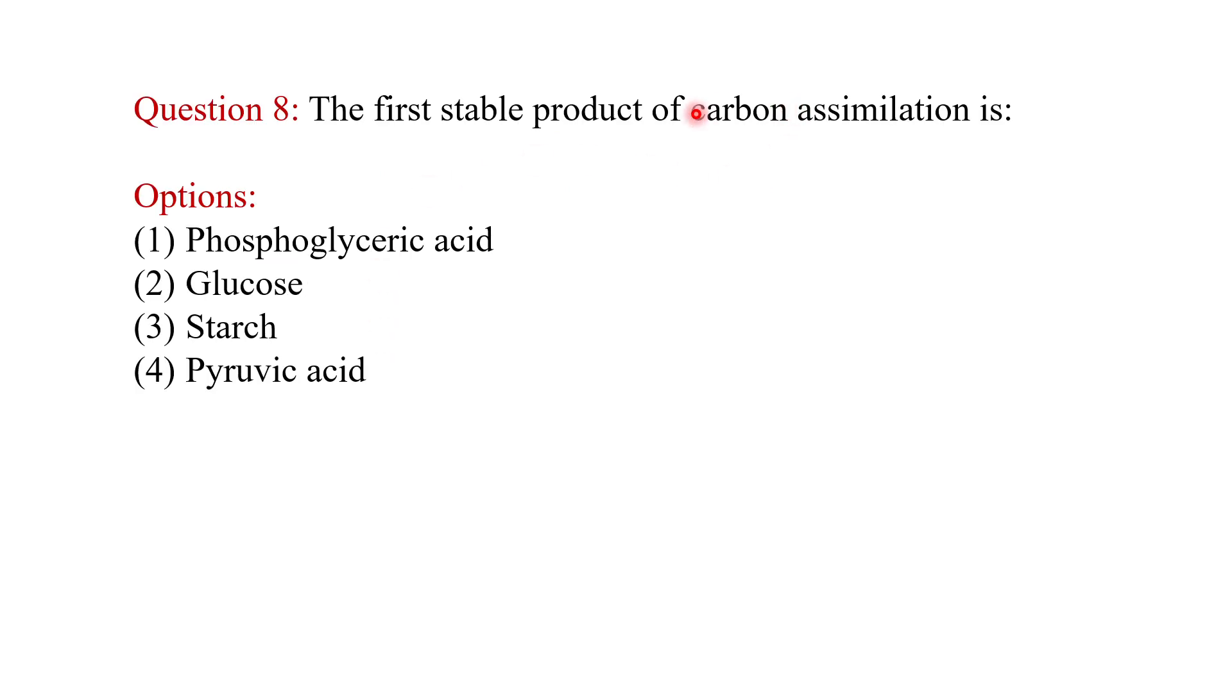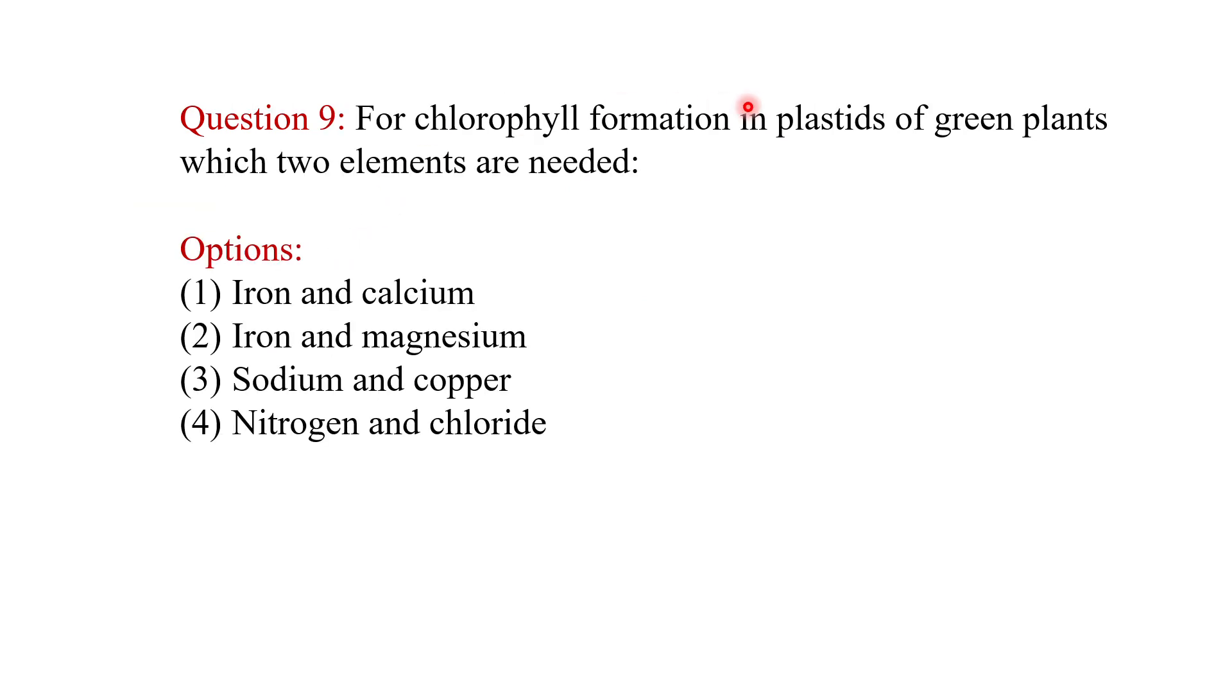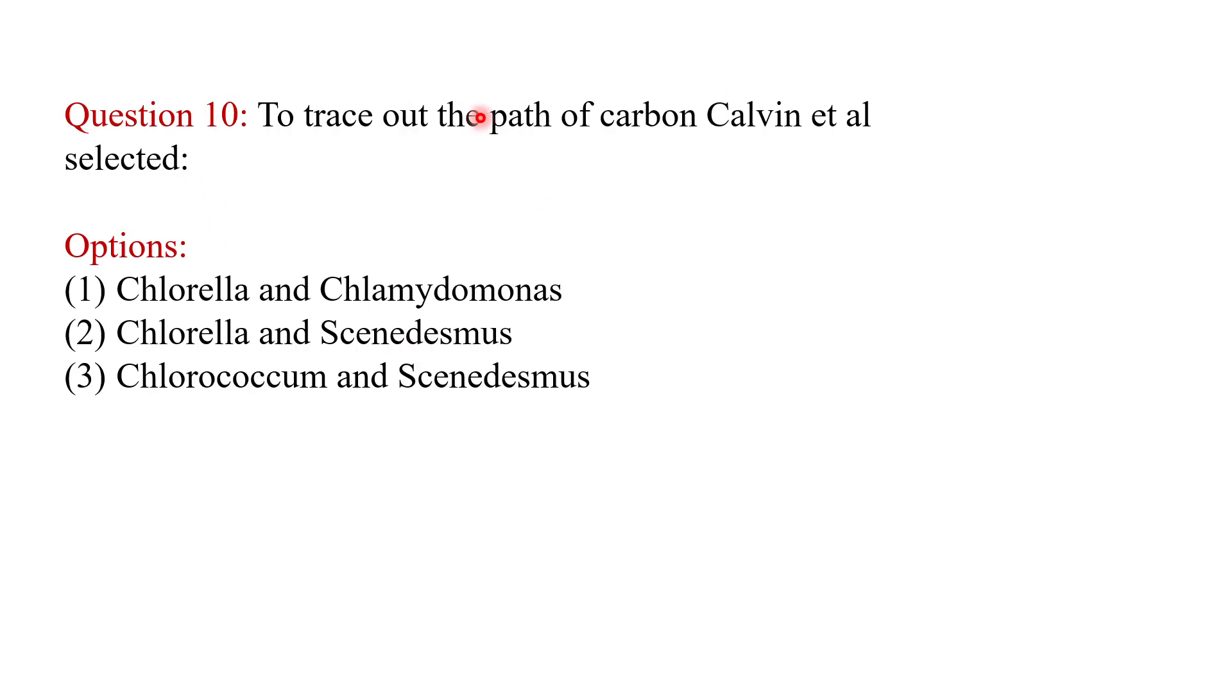The first stable product of carbon assimilation is phosphoglyceric acid or PGA. For chlorophyll formation in plastids of green plants, which two chemicals are needed? The answer is iron and magnesium or Fe and Mg. To trace out the path of carbon, Calvin et al. selected which two microorganisms? These are Chlorella and Scenedesmus.